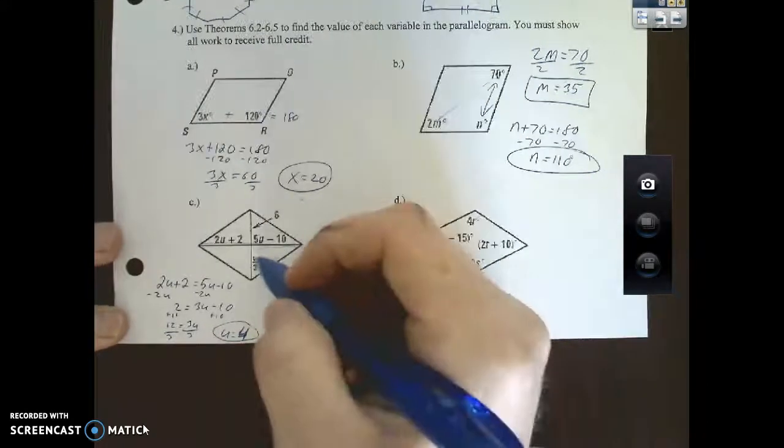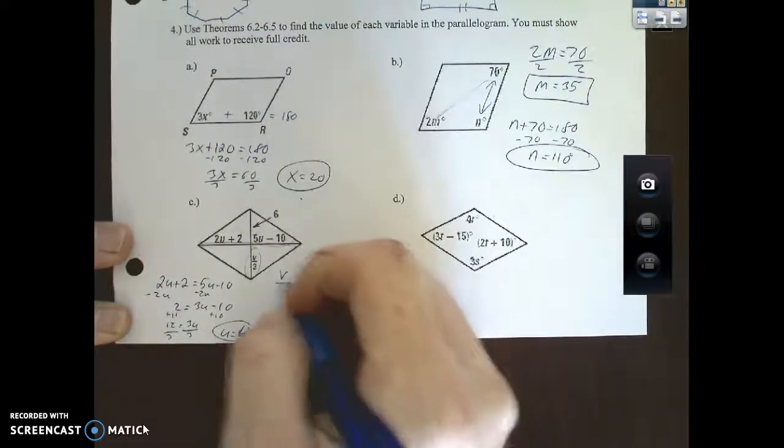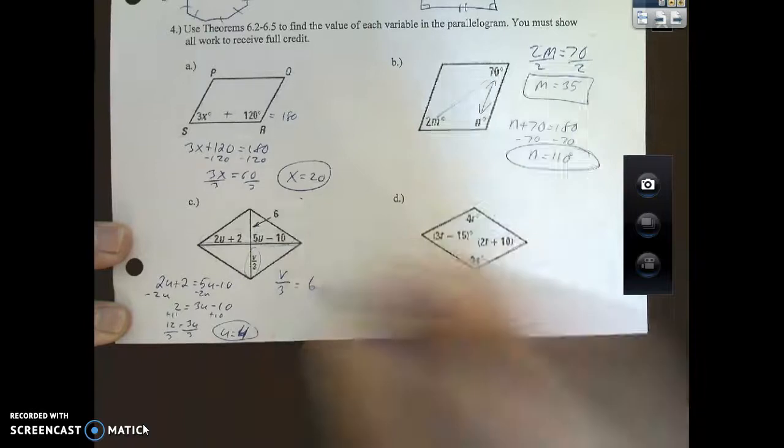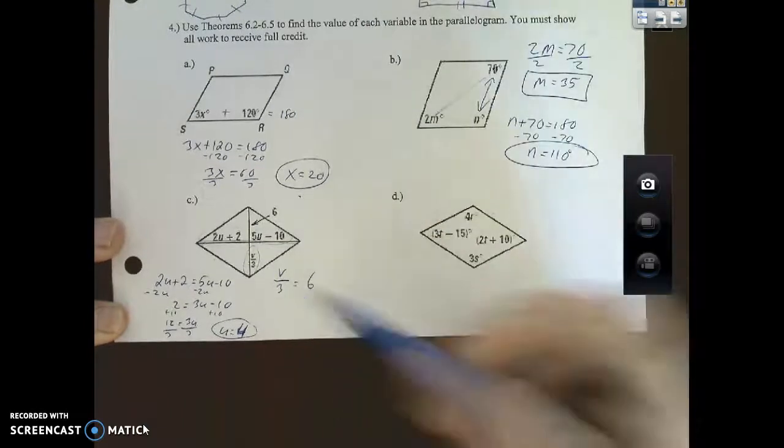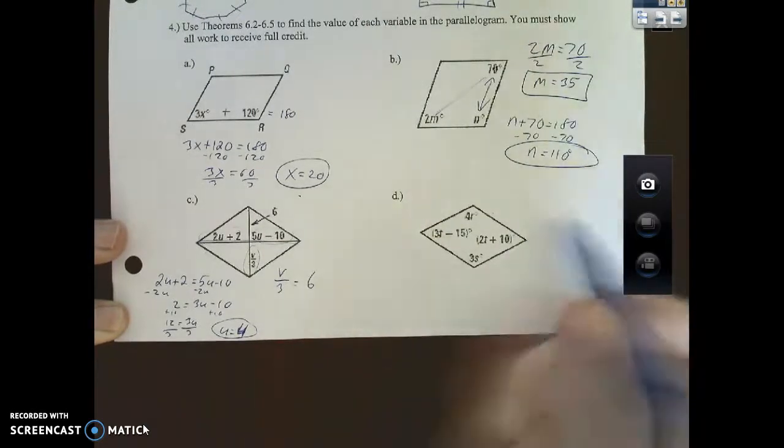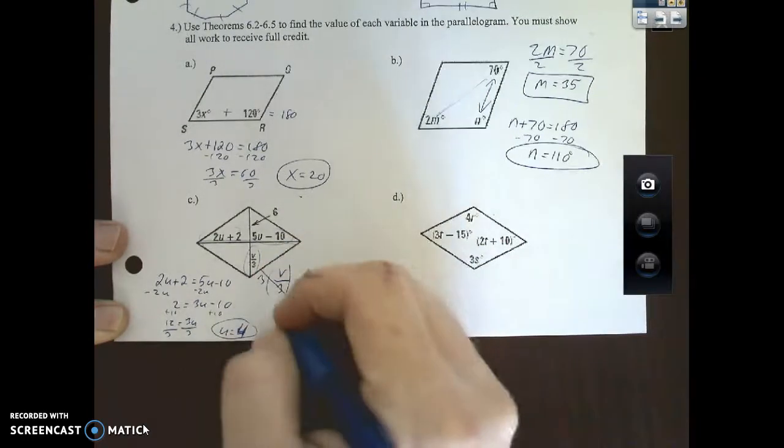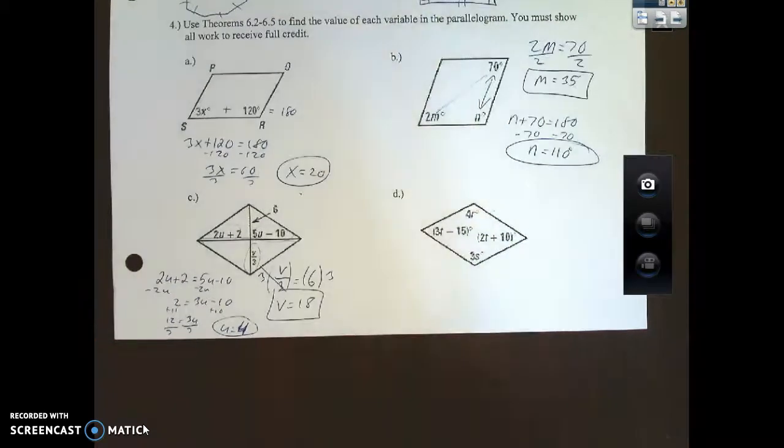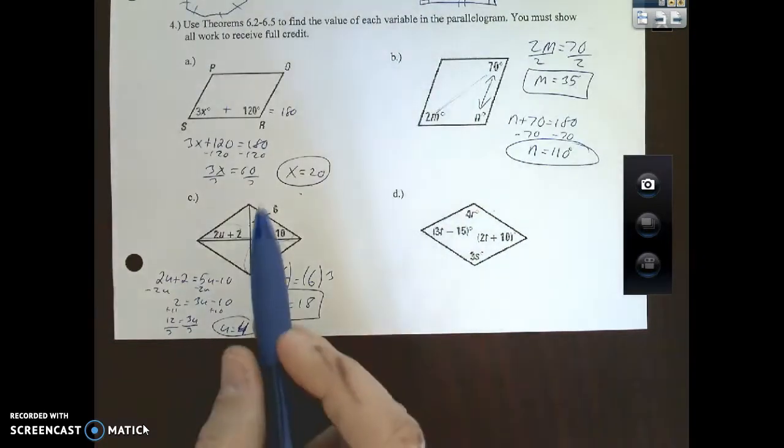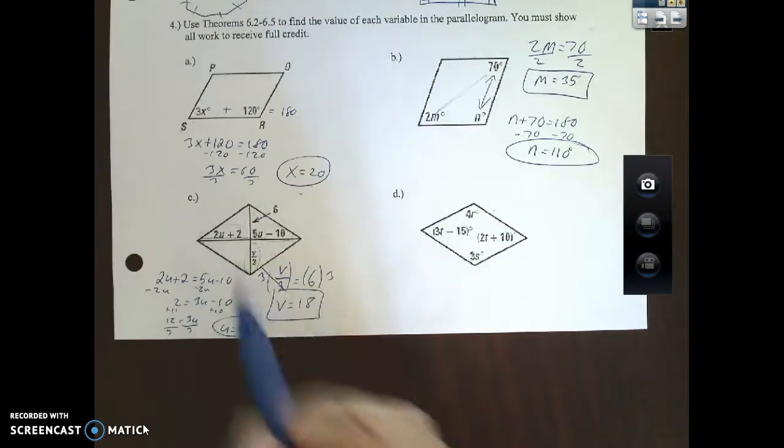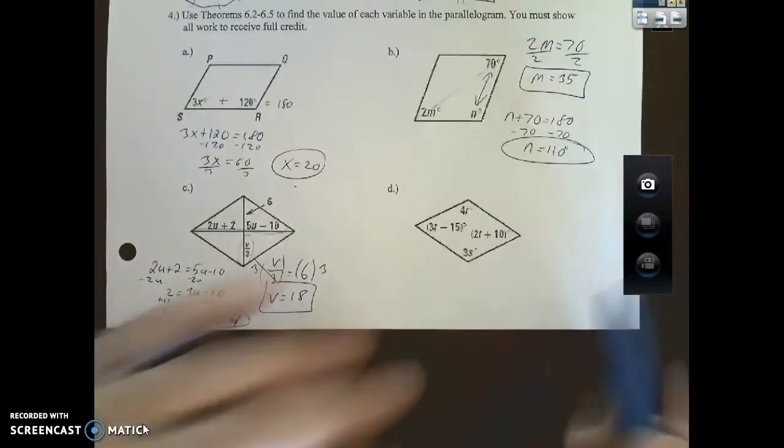Now here's the tricky one: v over 3 equals 6. What's the opposite of divide? Multiply. I'm going to multiply both sides by 3 here, v equals 18. Simple enough, but again, diagonals you're making congruent on the same diagonal.